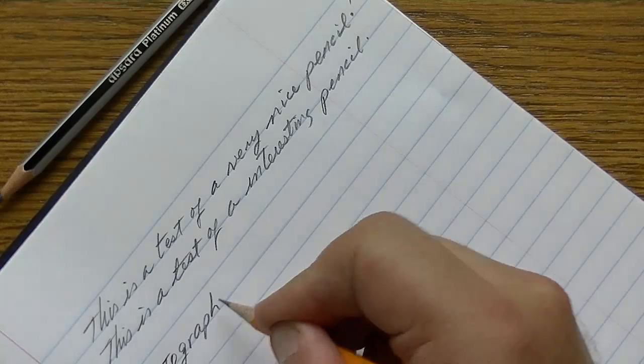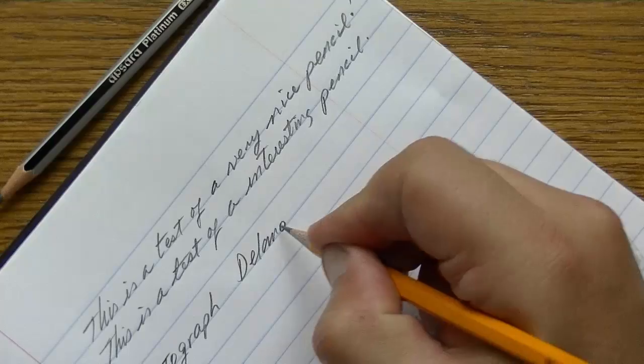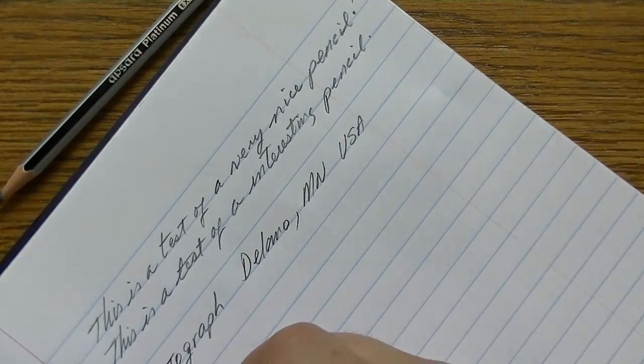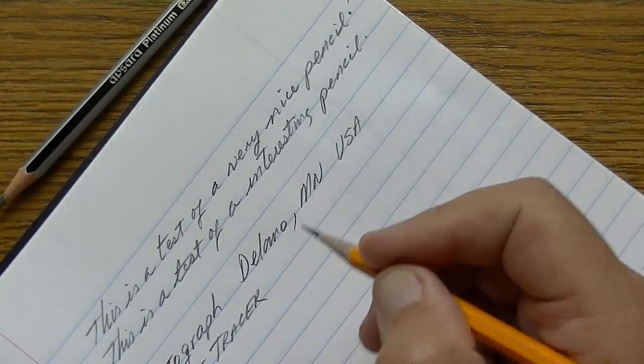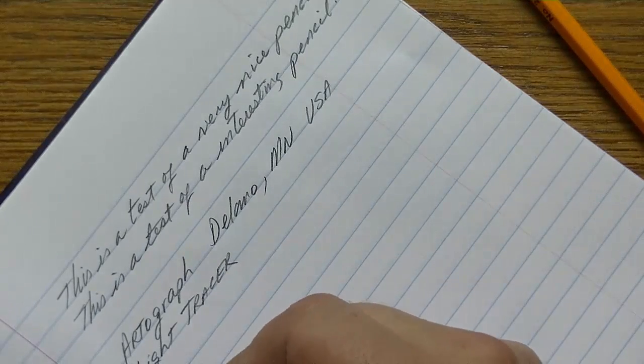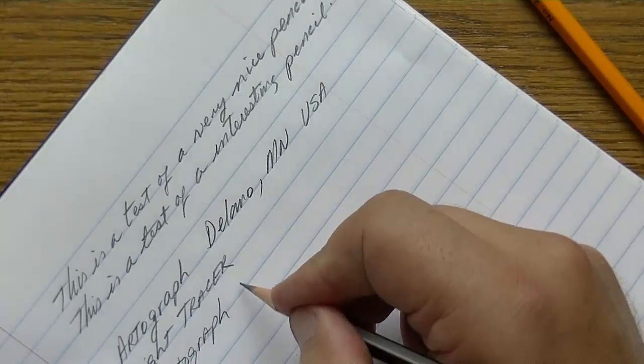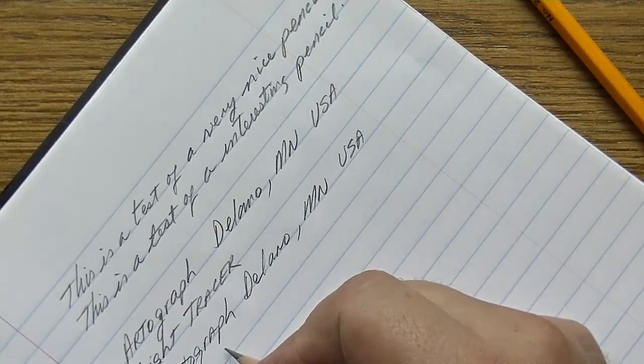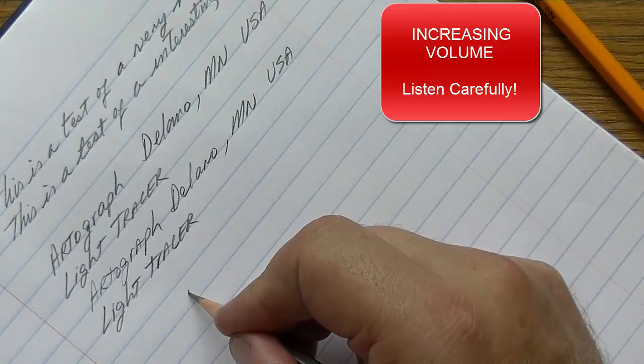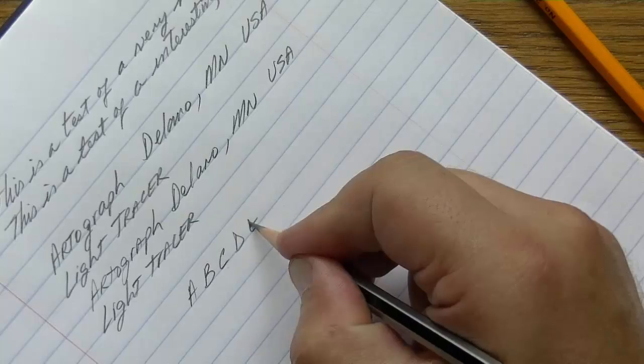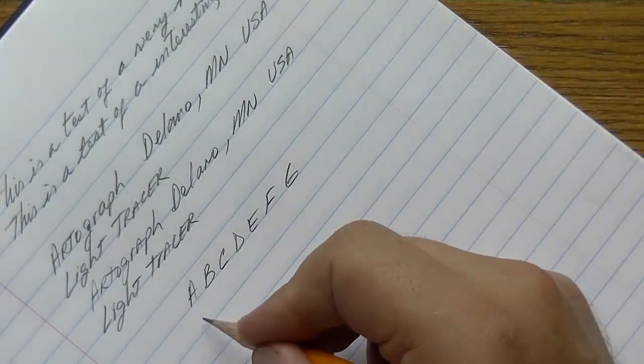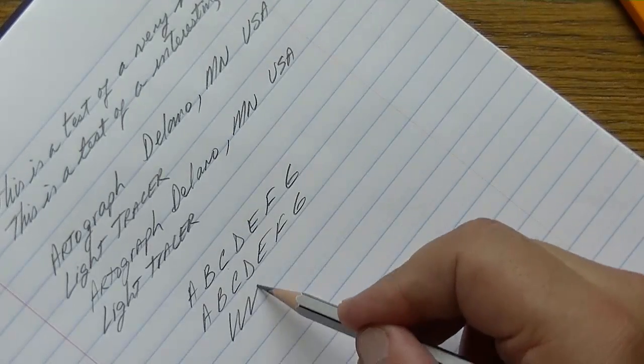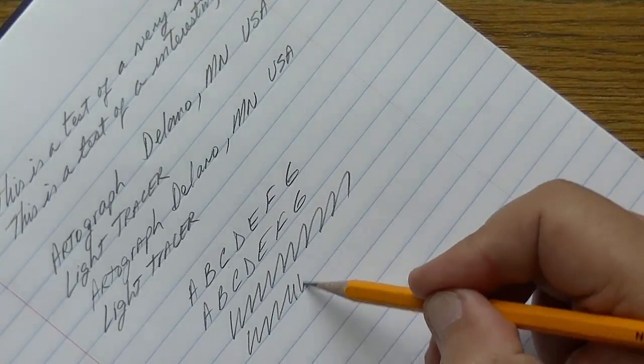Artograph from Delano MN. I think might be Minnesota USA. Light tracer. And then we'll do this here. Okay. Sounds different. It does feel... A B C D E F G. A B C D E F G.